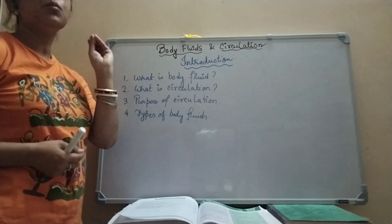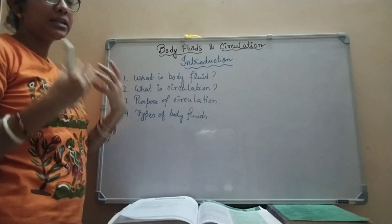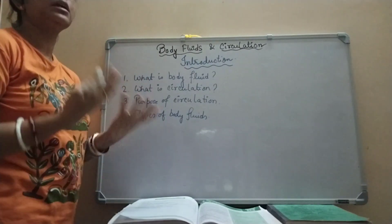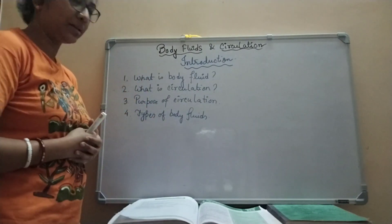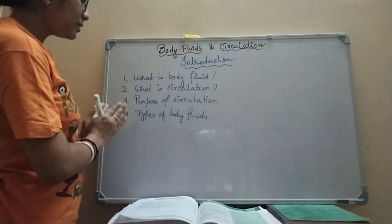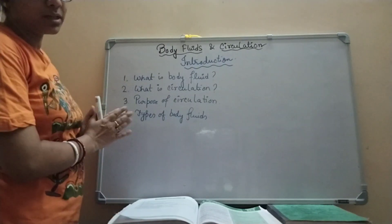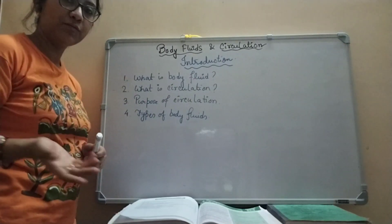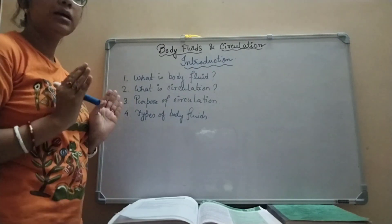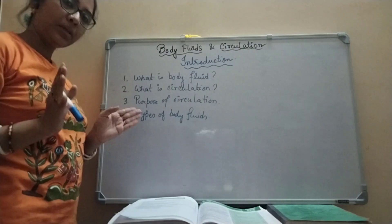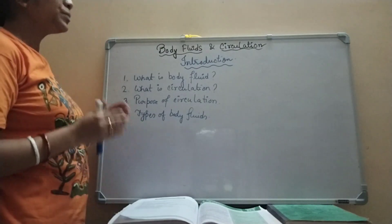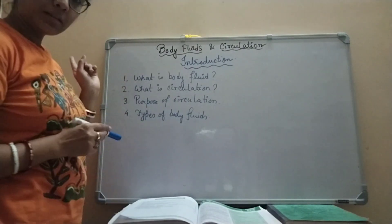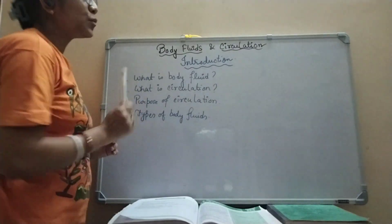Next, what is the motive or purpose of circulation — why does circulation happen? And the fourth question is: what are the different types of body fluids we can consider? Let's start addressing the first question: what is body fluid?